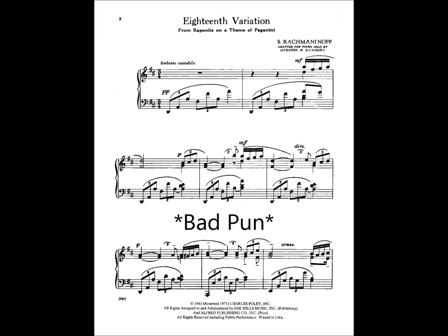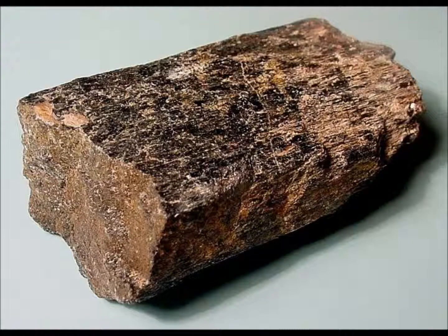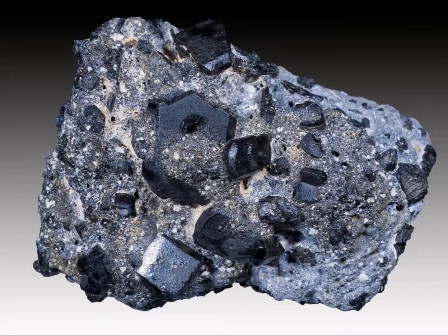Due to its varying composition, augite can be black to brown to greenish to violet, and is commonly a forest green color. Augite's natural crystal behavior is to form short prismatic crystals with rectangular or octagonal cross-sections.